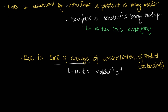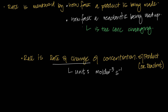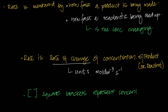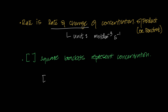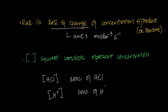Another symbol you'll come across a lot is square brackets. Square brackets represent concentration. For example, writing [HCl] means the concentration of HCl, and writing [H⁺] means the concentration of H⁺ ions. That's what square brackets mean.